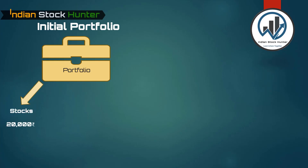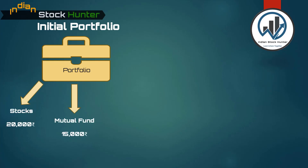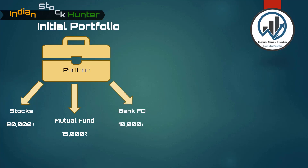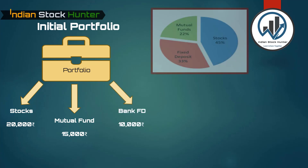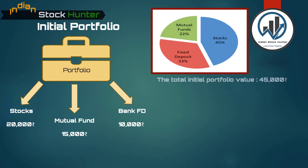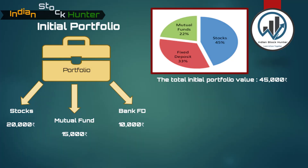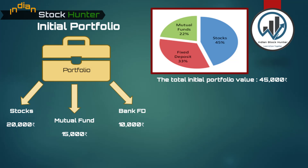Let's take an example to understand this. Suppose five years back, Mr. Amrish made three different investments: he put rupees 20,000 in stocks, rupees 15,000 in mutual funds, and rupees 10,000 in bank FD. The total initial portfolio value of Mr. Amrish was rupees 45,000, as represented in the first pie chart. This total portfolio value is called net worth.